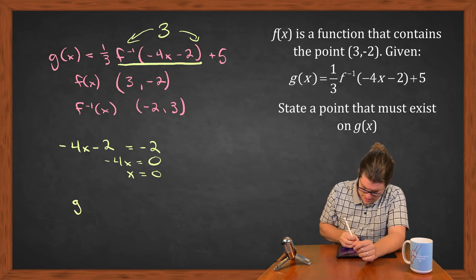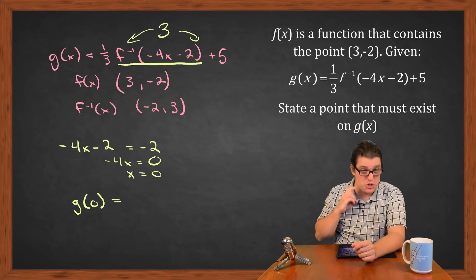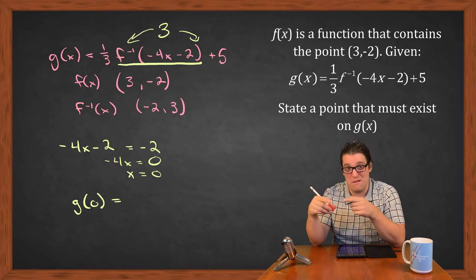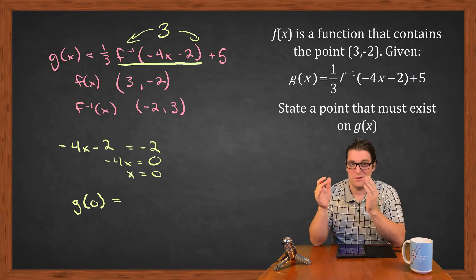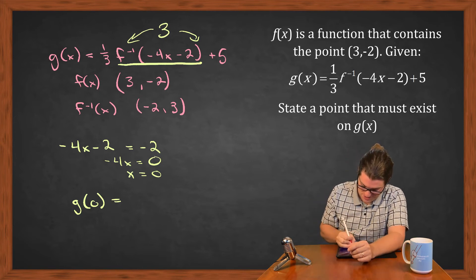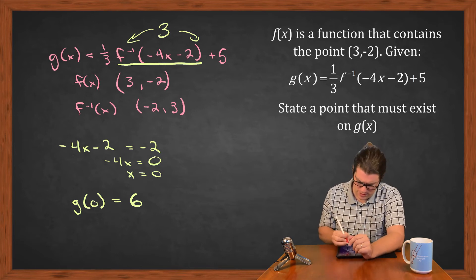So if I were to put in an x value of 0, I know that the g of 0 is going to be f inverse of -2, which is 3, so 1/3 of 3 is 1, plus 5 is 6. So this g(0) gives us 6, which means I know a point on g. That point is (0, 6).